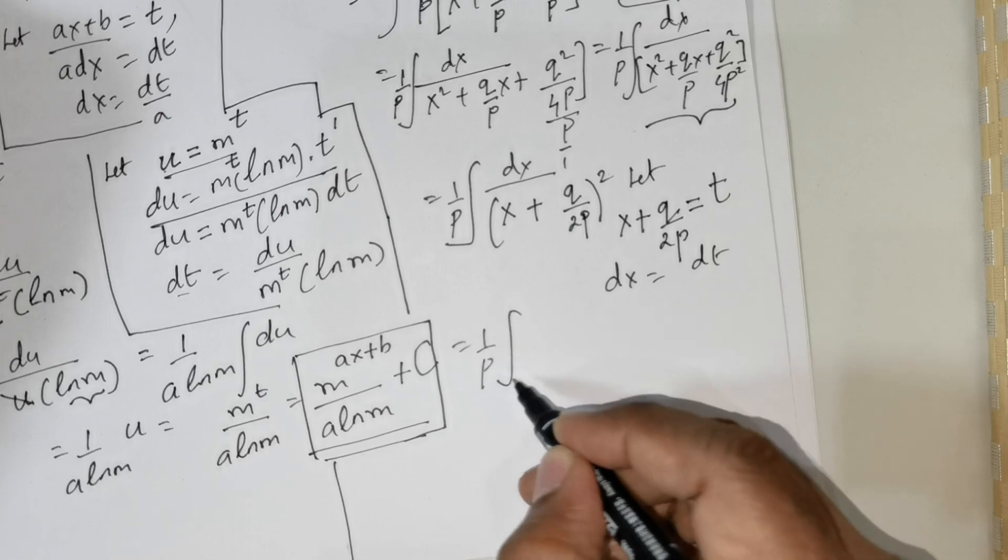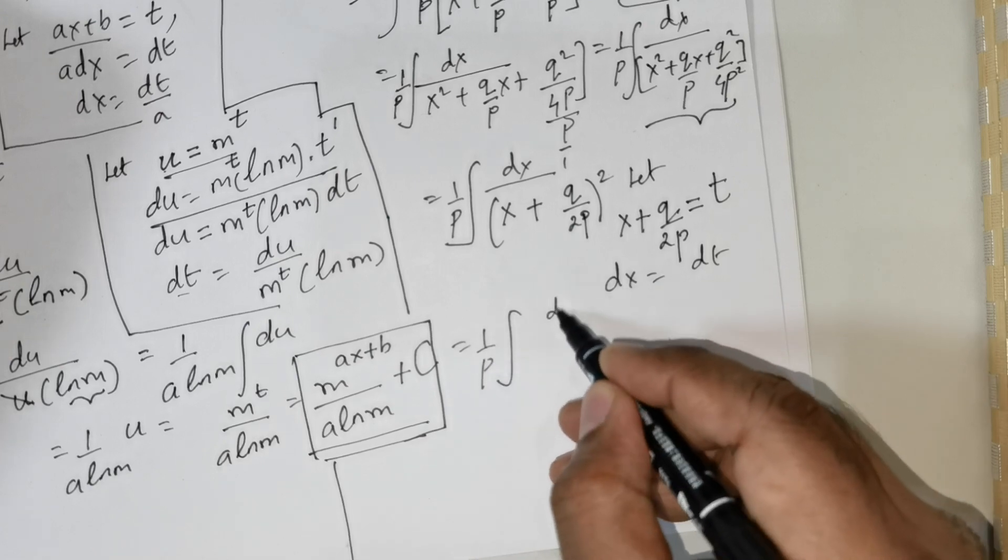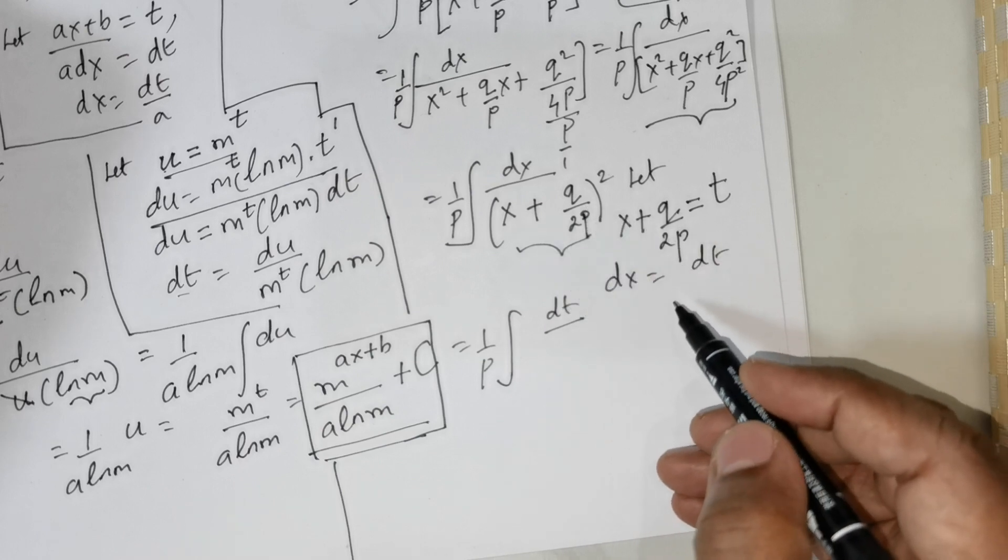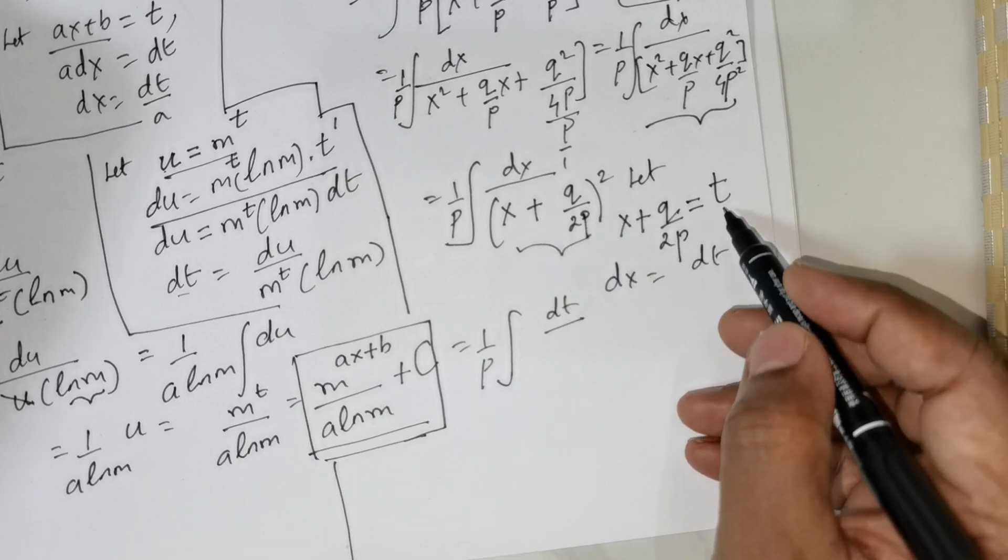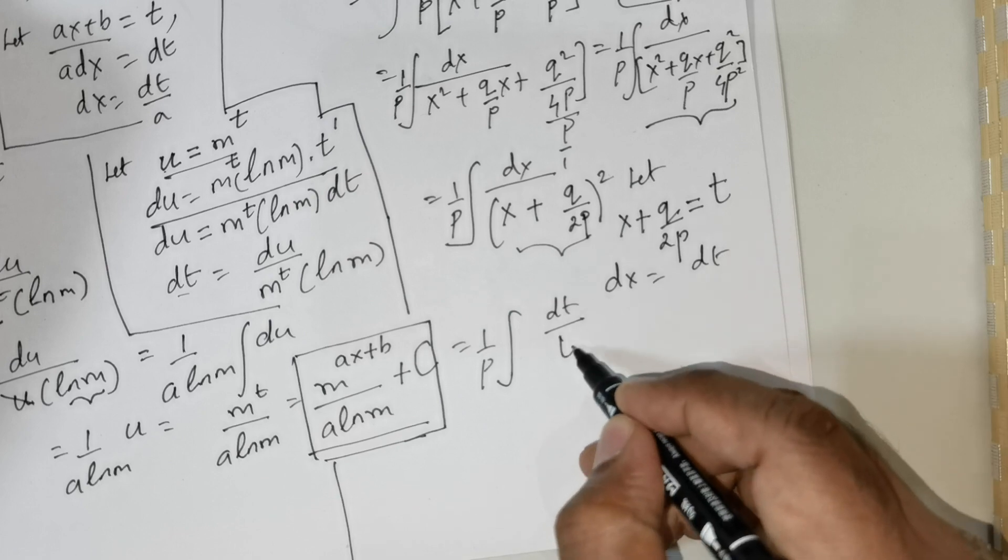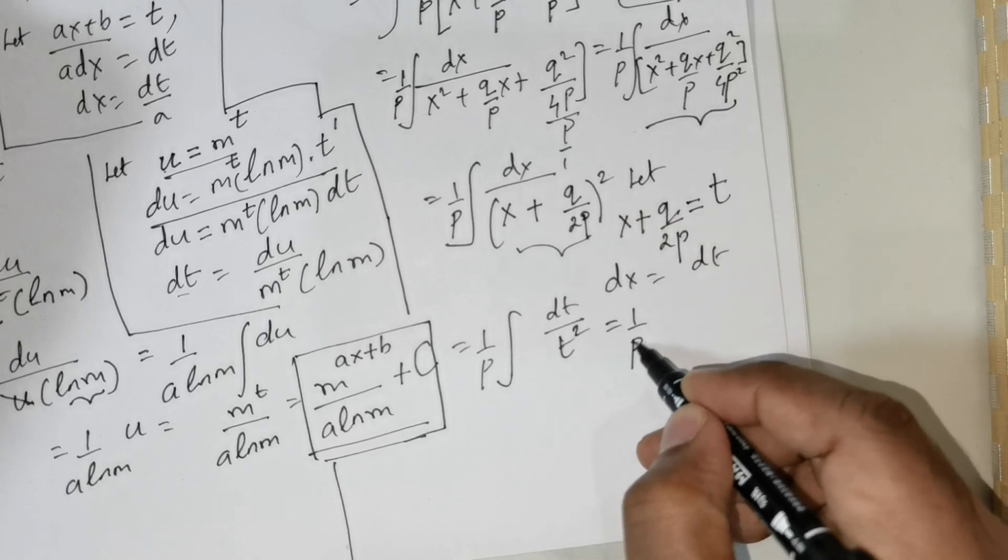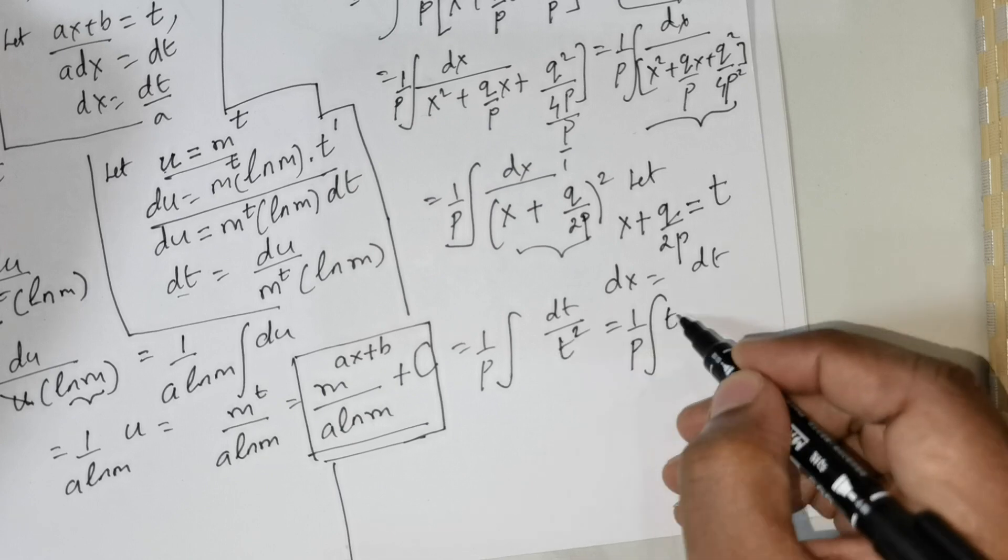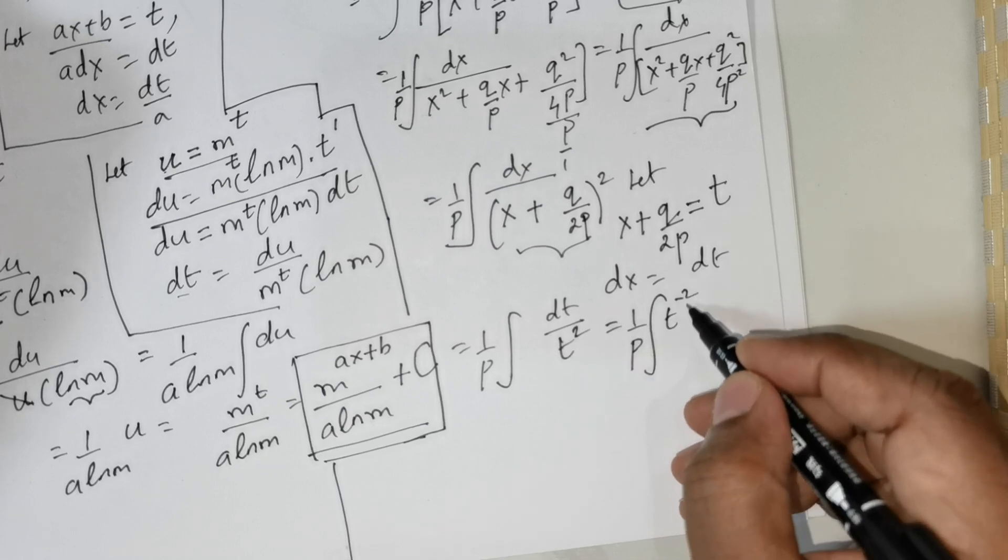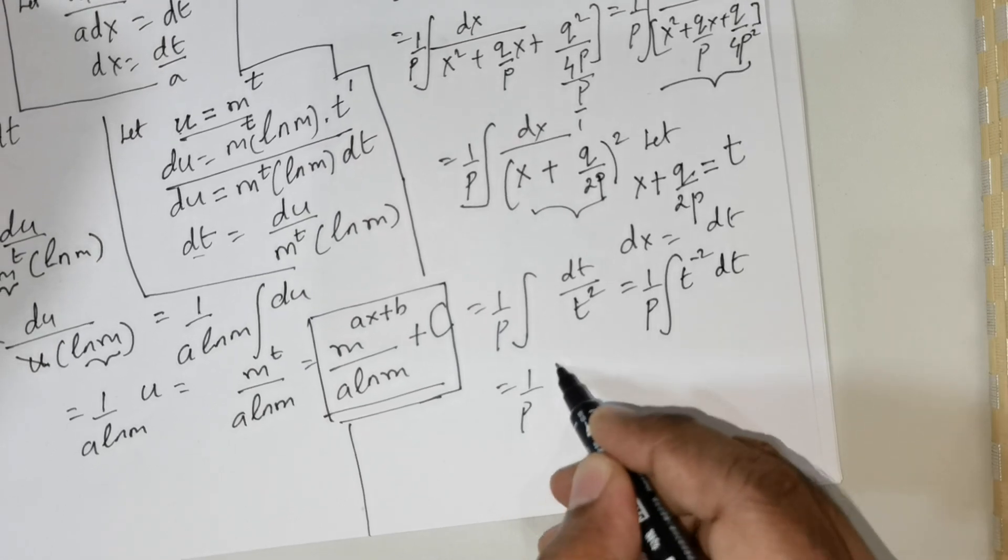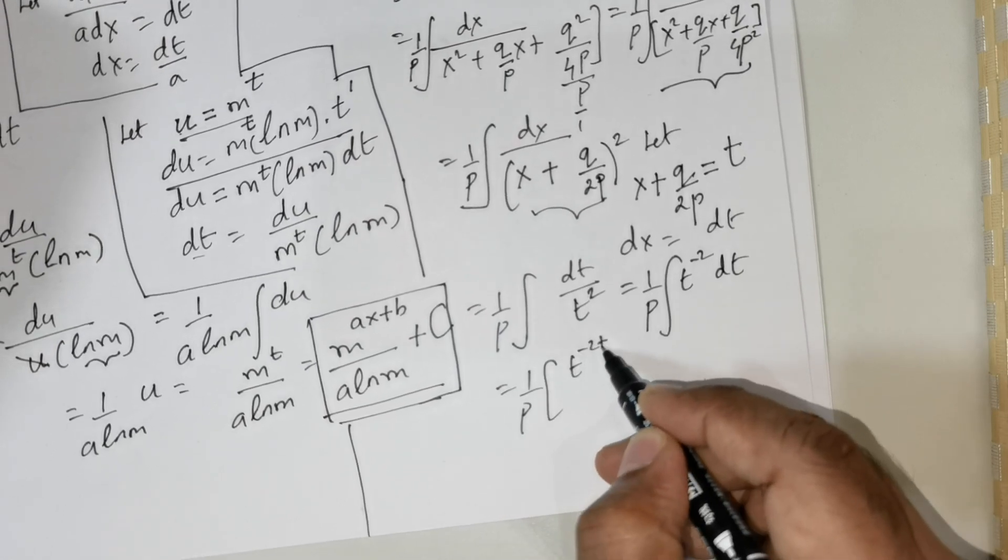So this equals 1 over p times integral. In place of dx substitute dt, in place of x plus q over 2p substitute t. This has got power 2. This can be rewritten as 1 over p times integral. t squared can be taken to the numerator with a negative sign. Now you integrate this.